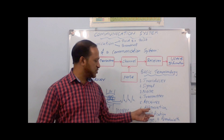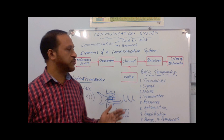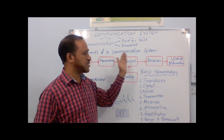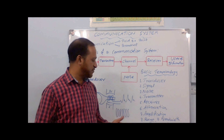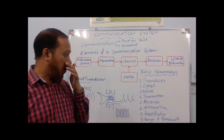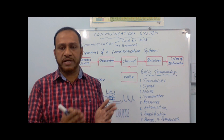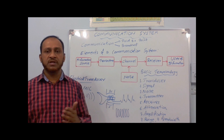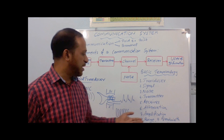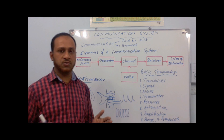Amplification is the opposite of attenuation — it is strengthening the energy of the signal, done in the receiver. Range means the maximum possible distance up to which the signal can be received by a receiver; it depends upon the frequency of the signal. Bandwidth is the maximum frequency range needed for transmitting a particular signal. For example, for speech signals in telephonic communication, the minimum frequency is 310 Hz and the maximum is 3000 Hz, so nearly 2900 Hz of frequency variation is required as bandwidth.